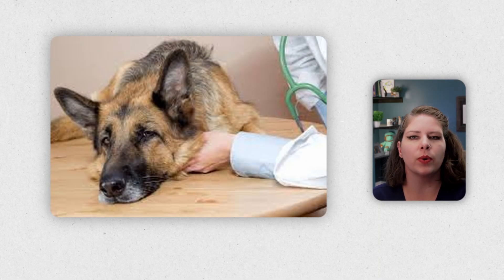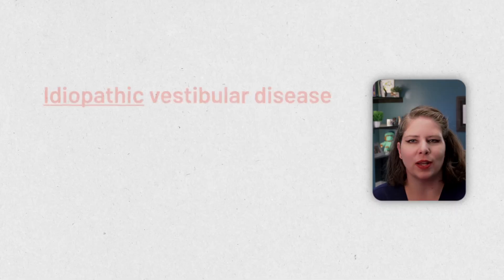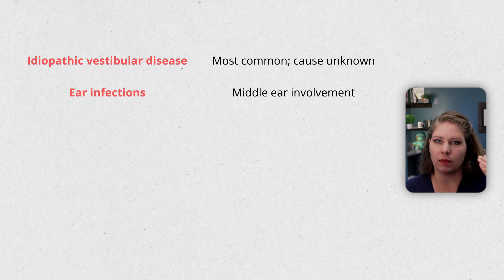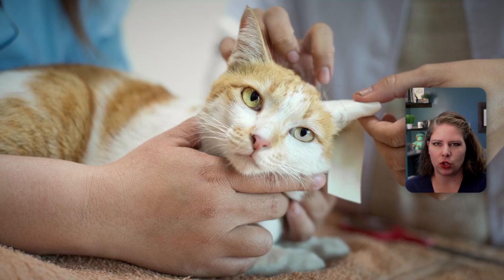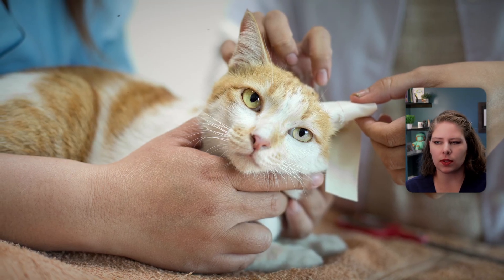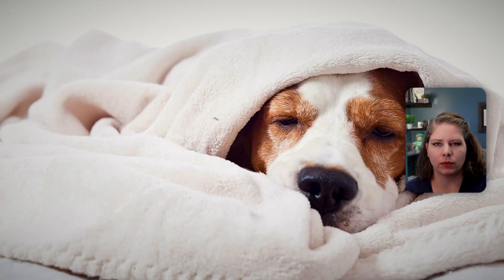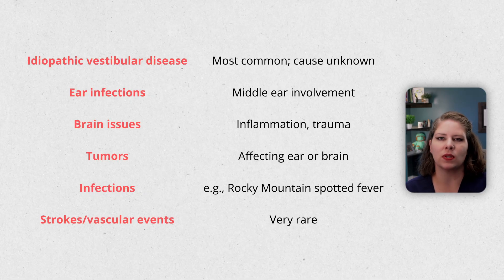The most common cause for these symptoms in cats and dogs is what we call idiopathic vestibular disease — and the word idiopathic means we haven't fully figured out exactly why this is happening, which is frustrating. There are a bunch of other possible causes: an ear infection involving the middle ear, anything causing inflammation or trauma to the brain, a tumor impacting the middle ear or the brain, or an infection like Rocky Mountain spotted fever. And rarely — very rarely — is it because of vascular clotting issues like strokes.